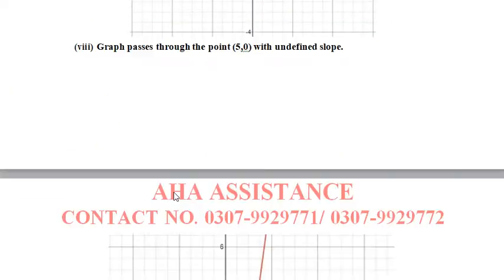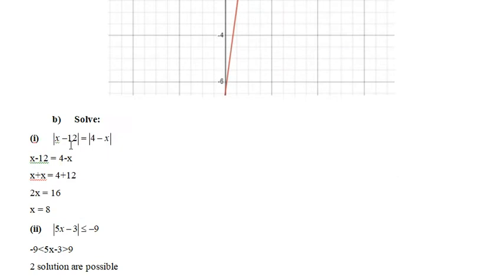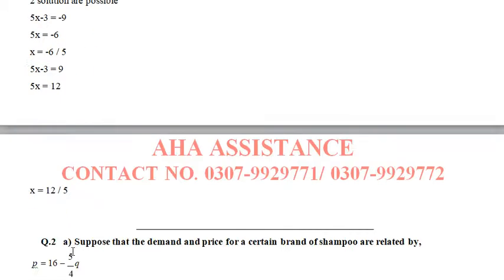Next question is, you have to solve the mod of x minus 12 equals to mod of 4 minus x. First of all, you have to cancel the mod of x terms. We will find out the x value. We will also do part 2.